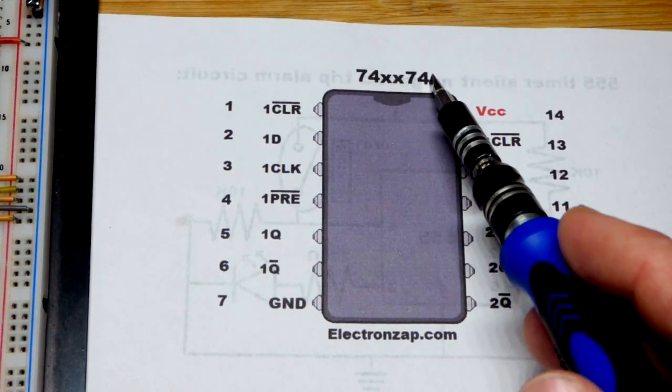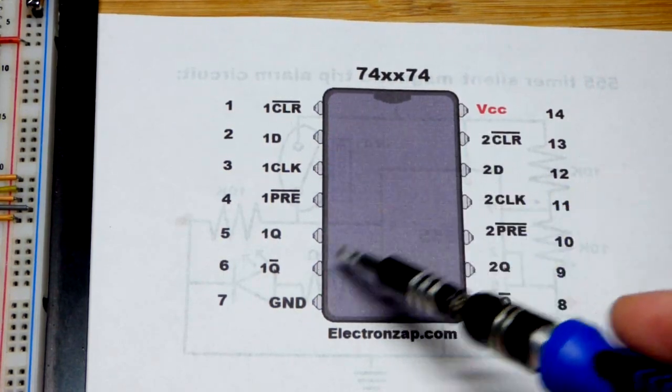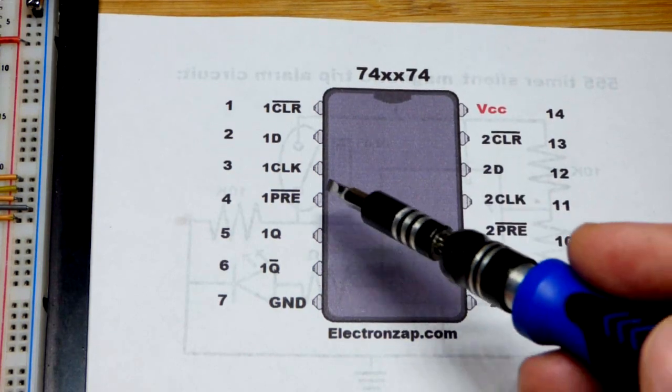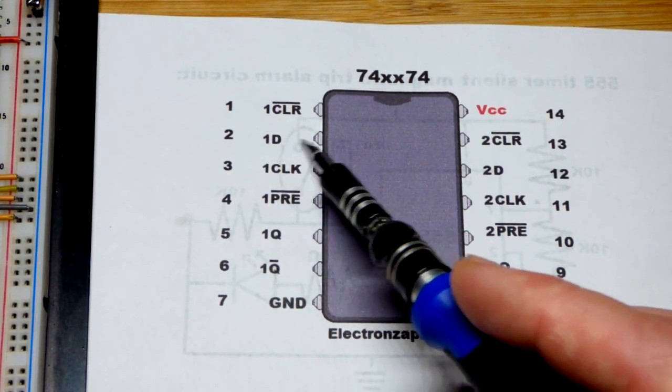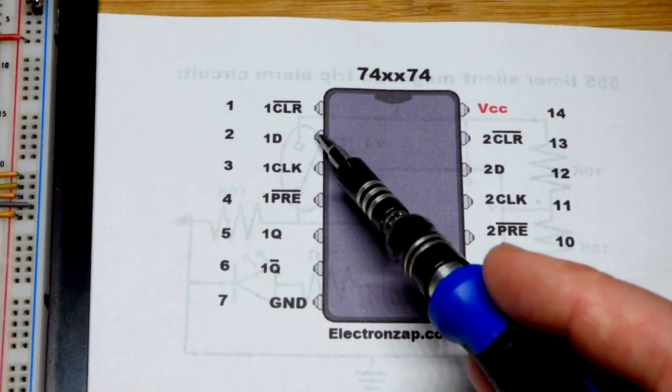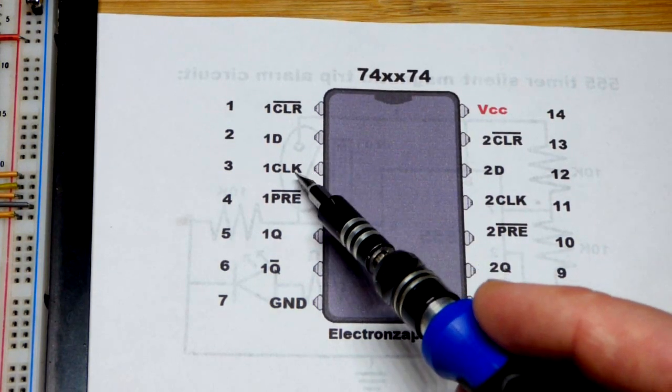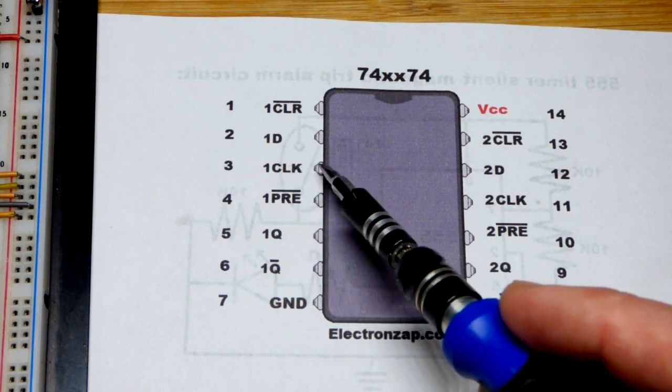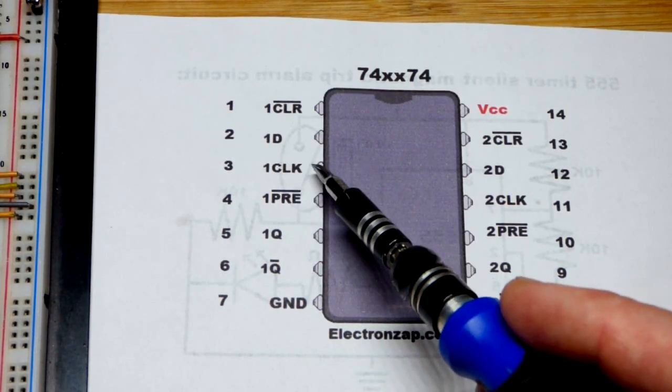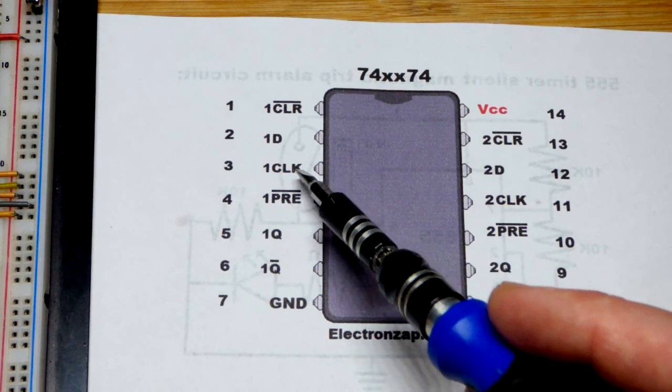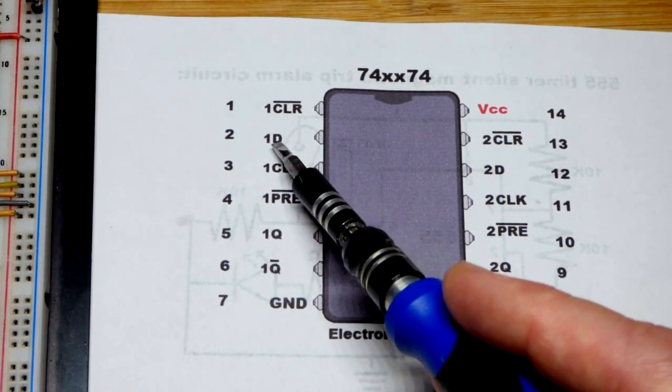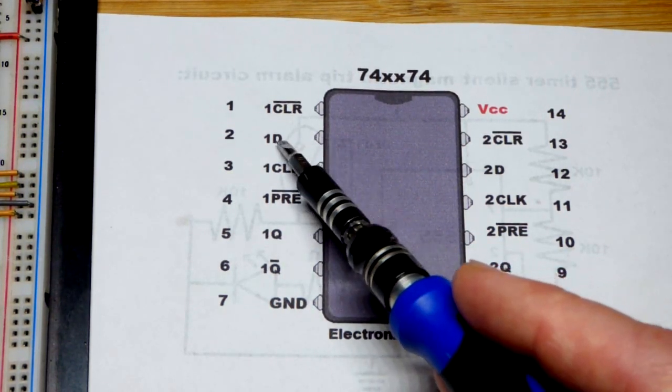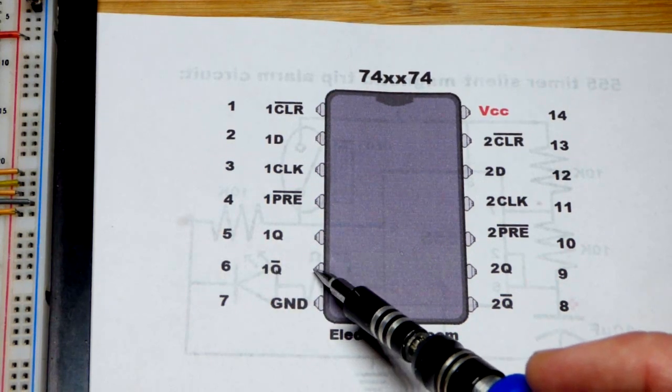In any case, the 7474 is a dual D-type flip-flop. There's two circuits in there. You can see we got a data pin right there, the D pin. It's positive edge triggered at the clock, so the integrated circuit is waiting for a high signal at the clock to do what it normally does, and that is to set Q to what D is, high or low. And then we got not-Q down here.